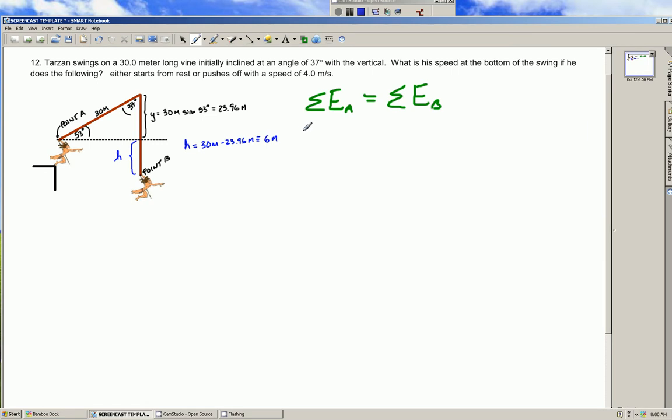So we can now start plugging into this generic relationship of the sum of the energies at point A equaling the sum of the energies at point B. We have the only energy at point A being its potential energy, the mass of Tarzan times the acceleration of gravity times the height difference between point A and point B is going to equal the kinetic energy at point B because all the potential energy has been used up. Well, we don't know Tarzan's mass, but luckily the masses cancel out from both sides of the equation and becomes irrelevant. It makes no difference what his mass is.